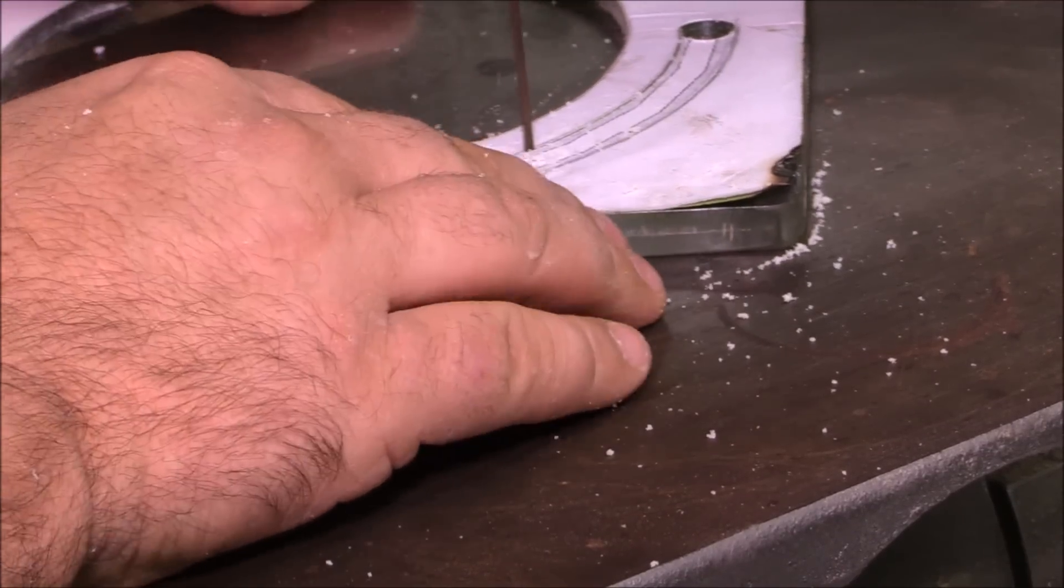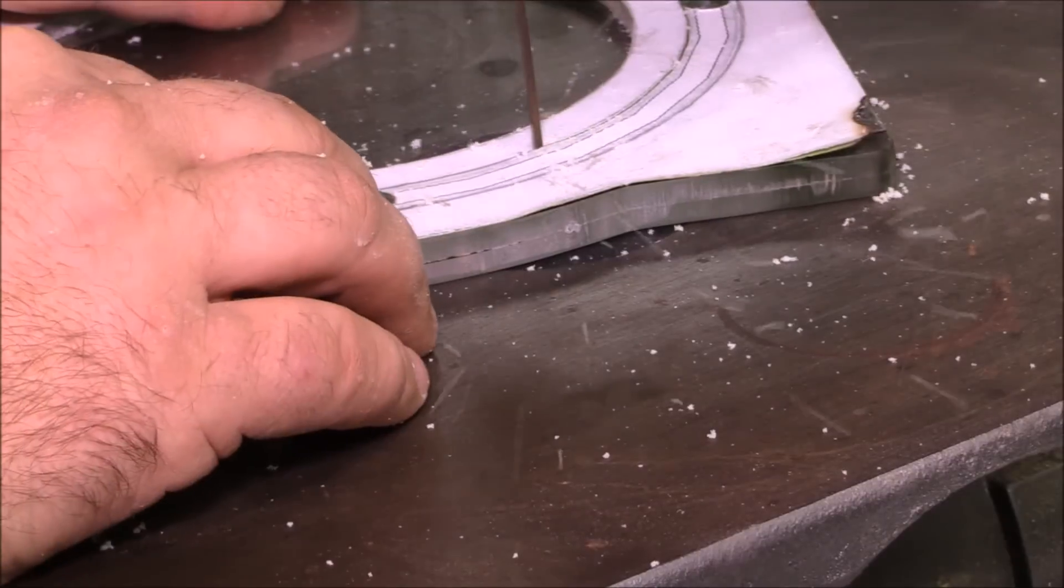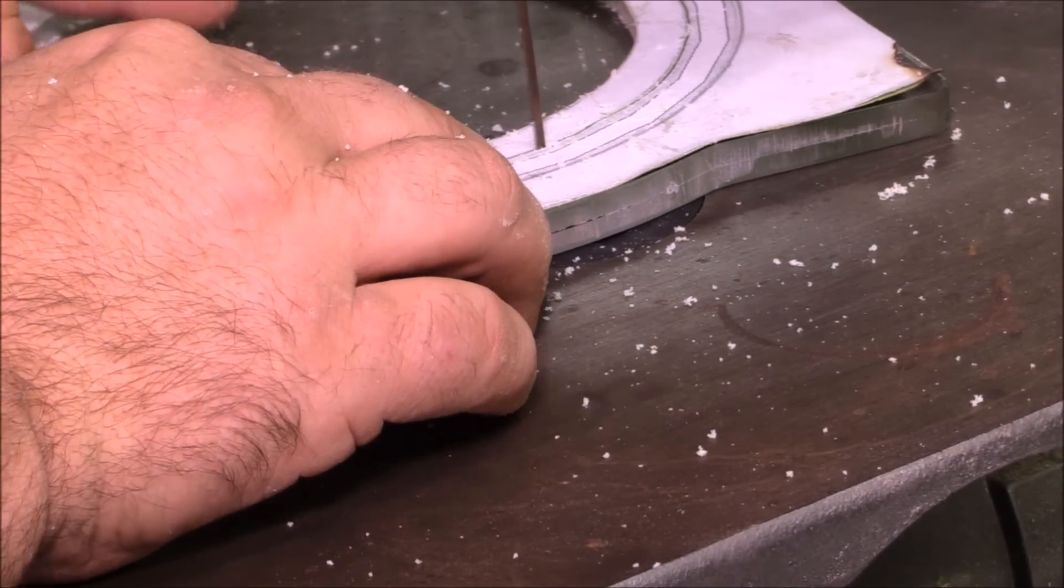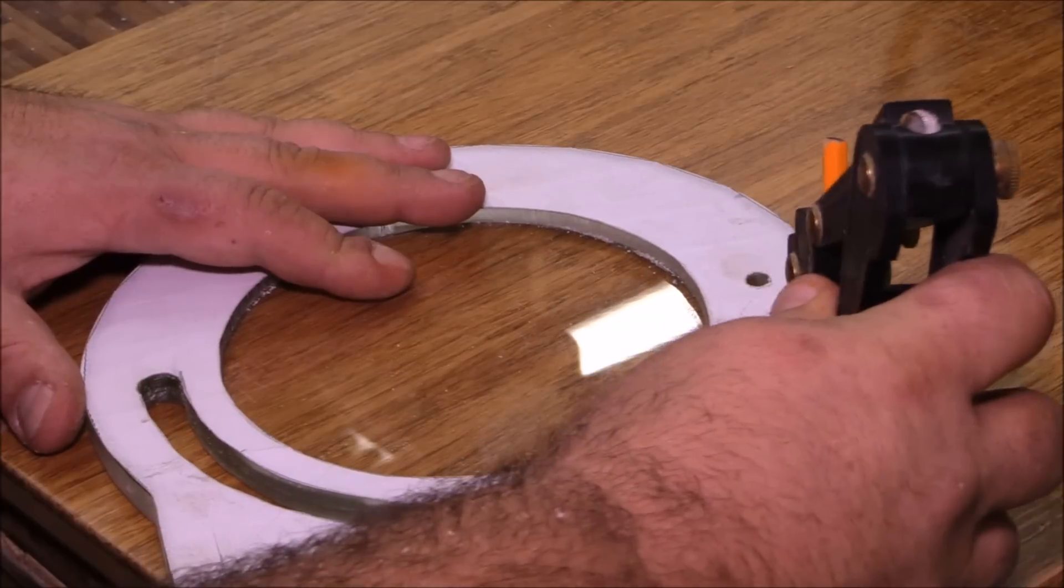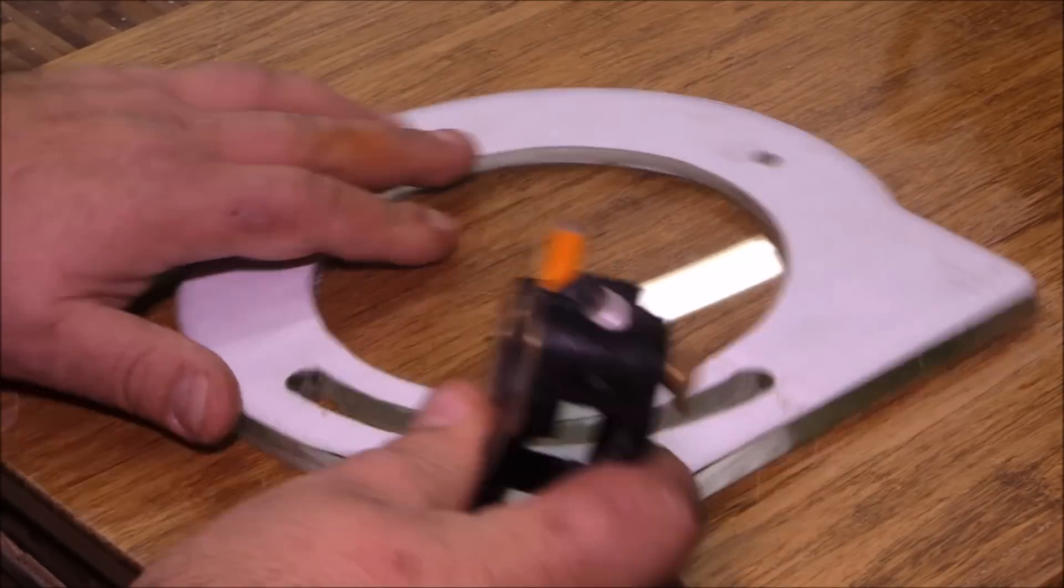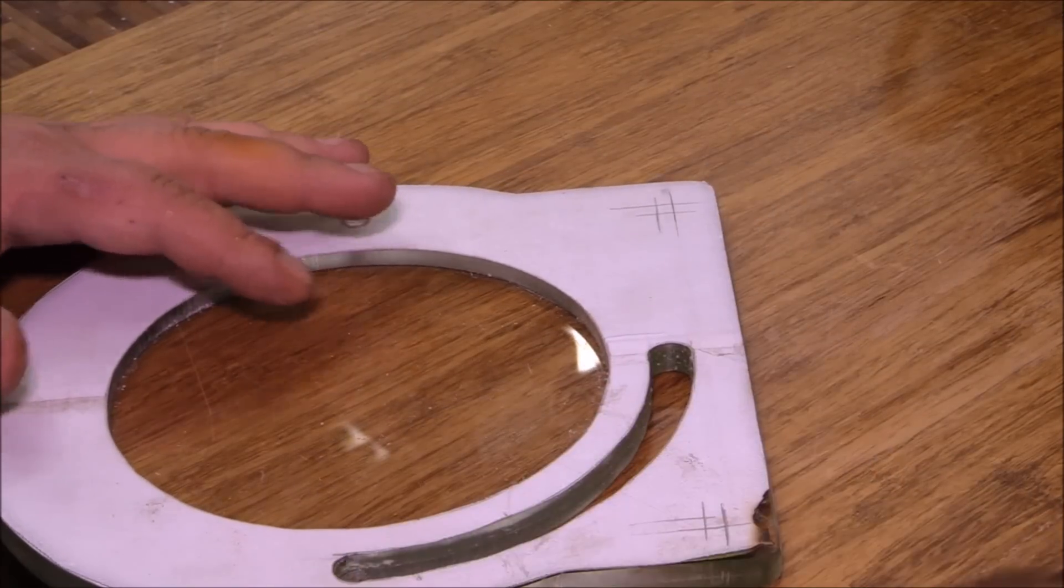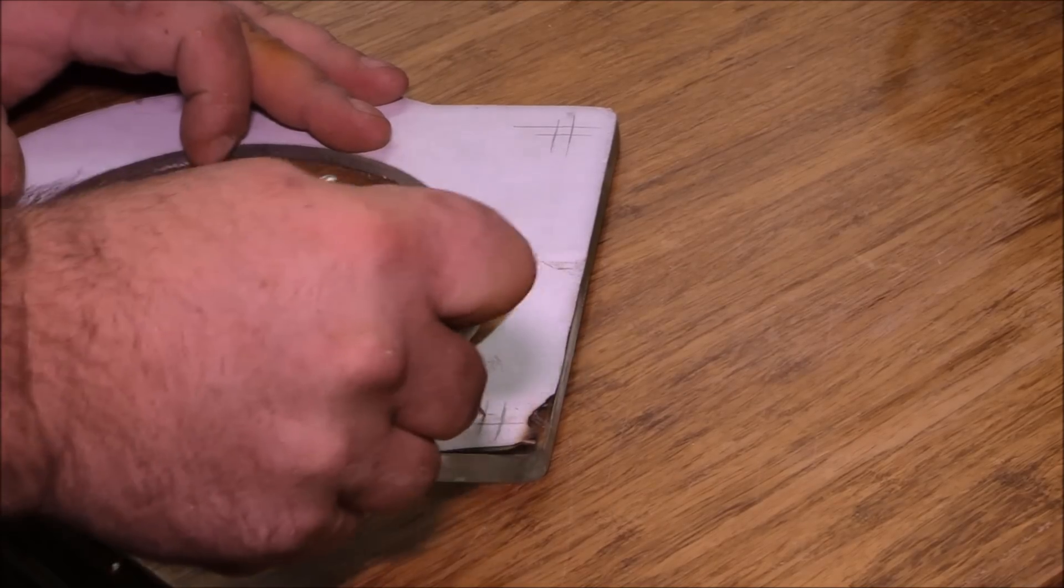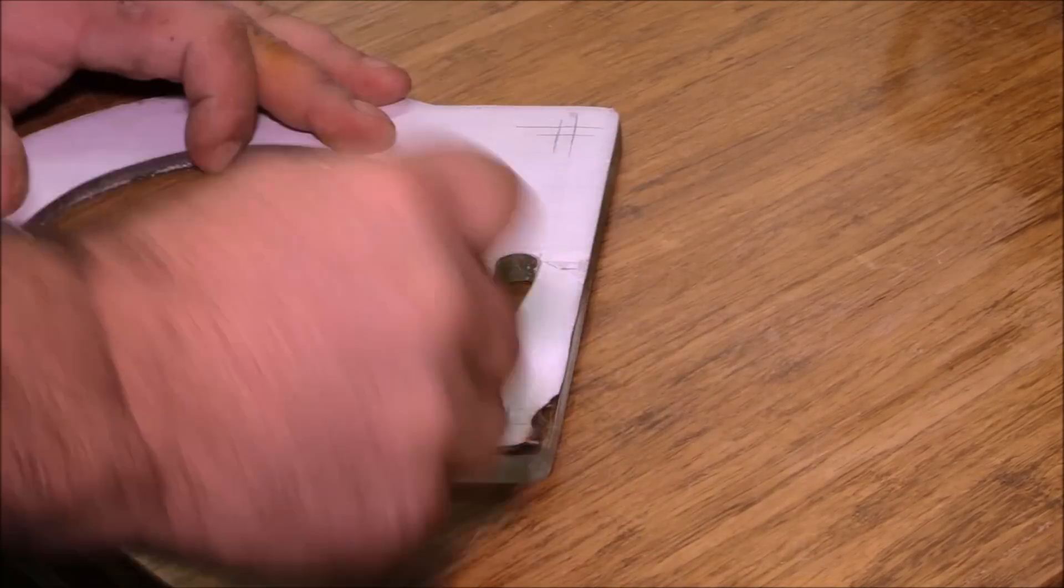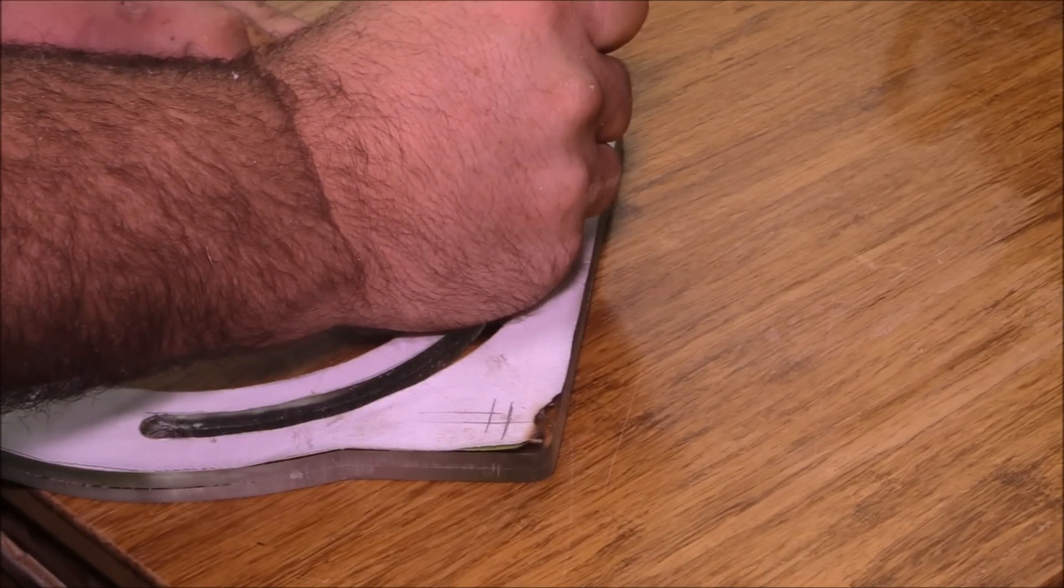After I drilled the holes, back over to the scroll saw and I cut out the slot. I find the more aggressive the scroll saw blade, the better it does. Now I want to cut some more holes kind of in this little offshoot that you see here, and this is going to do a couple of things.